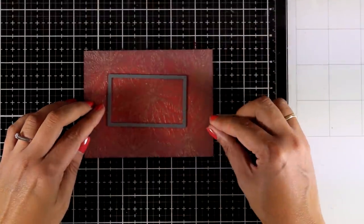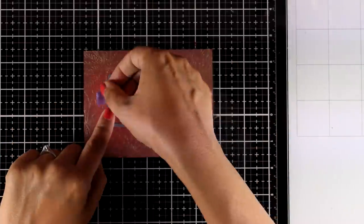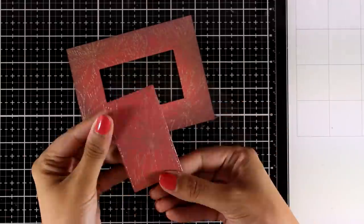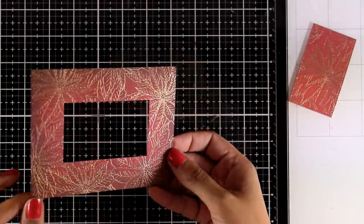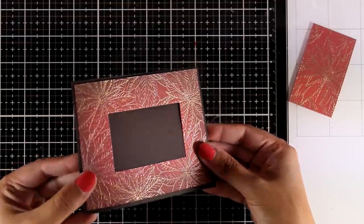Now I'm going to create a little window. For that I'm using just a rectangle die that I have in my stash. I'm going to secure it down with some purple tape and run it through my die cutting machine. And don't throw the leftover, you can always use it on another card.